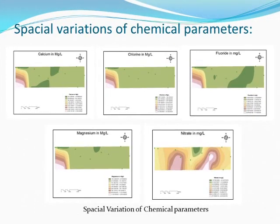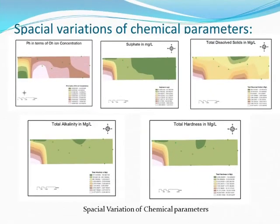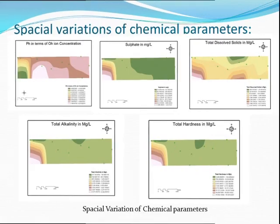Parameters like calcium, chlorine, fluoride, magnesium, and nitrate show the spatial variation mapping. These are the variations for pH, sulfate, TDS, alkalinity, and hardness. The spatial variations are performed using the spline curve method.